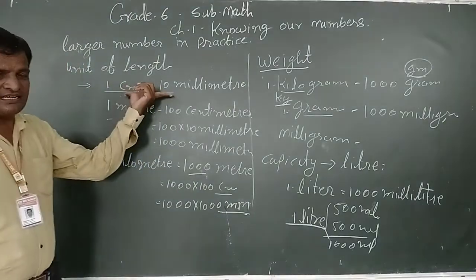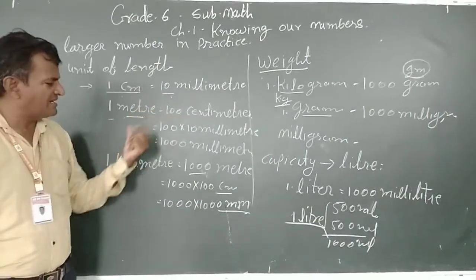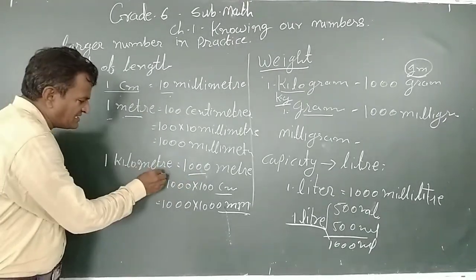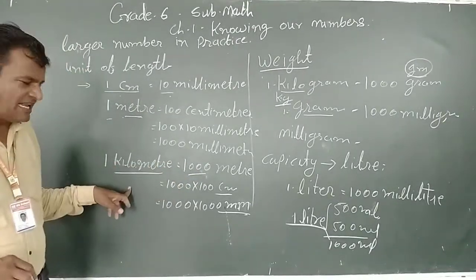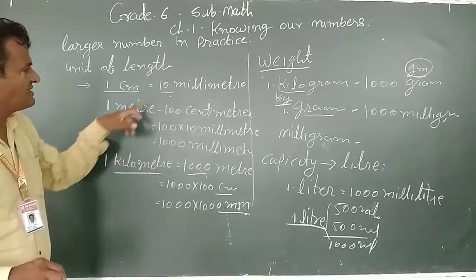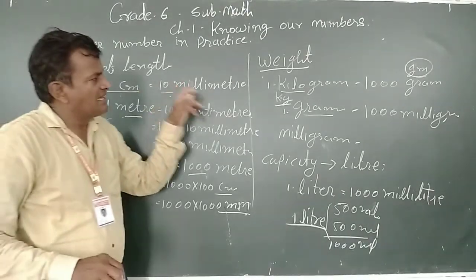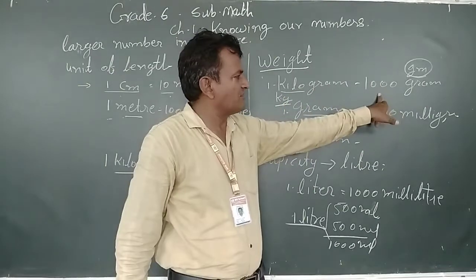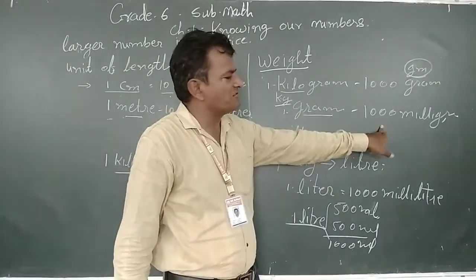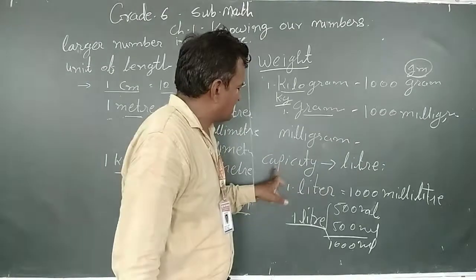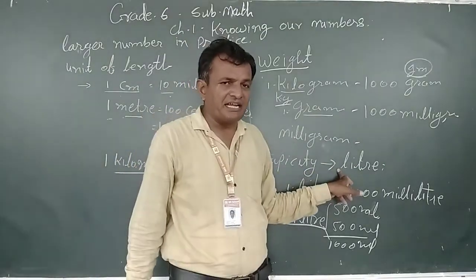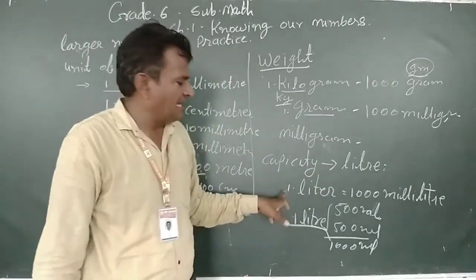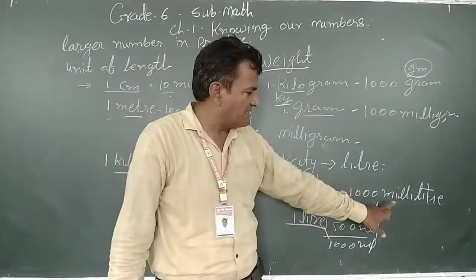To summarize: centimeter to millimeter, meter to centimeter, and kilometer to meter. The larger unit of length is kilometer, then meter, then centimeter, then millimeter. Same way for weights: 1 kilogram means 1000 grams, and 1 gram means 1000 milligrams. For capacity of liquid, 1 liter is equal to 1000 milliliters.